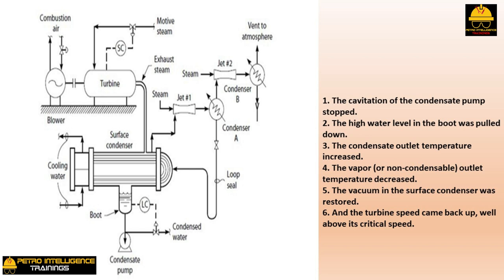The front-end plate on the cooling water side of the surface condenser — called the channel head cover — was removed. Most of the tube inlets in the channel head tube sheet were plugged with crayfish. The offending wildlife were removed, the condenser was reassembled, and motive steam was started to the turbine. Both the turbine and the air blower were running well above critical speed, and combustion air was lined up to the combustion chamber.